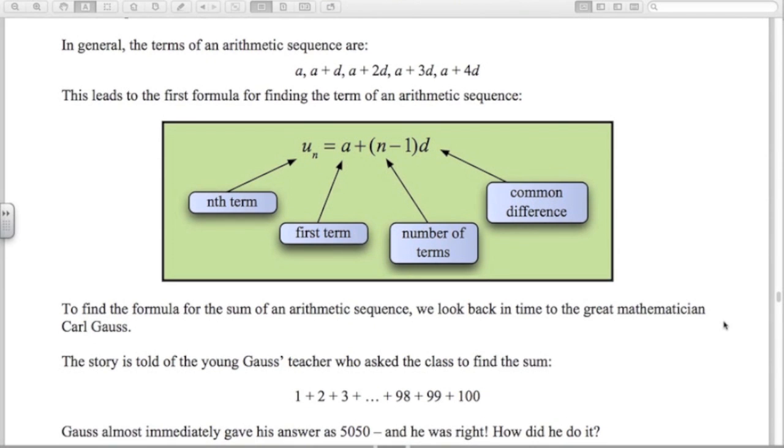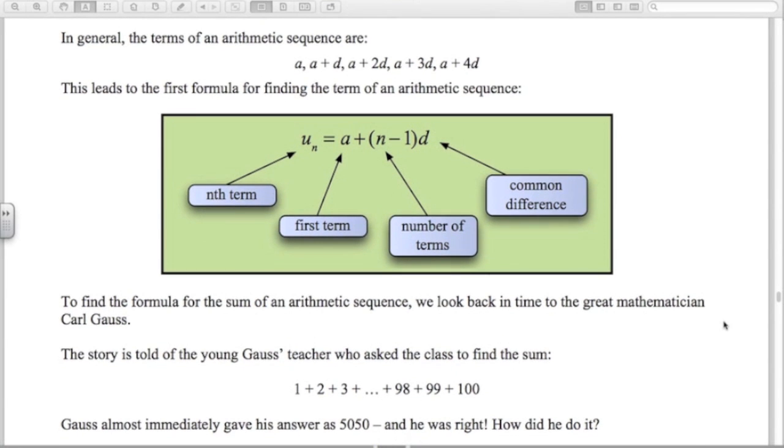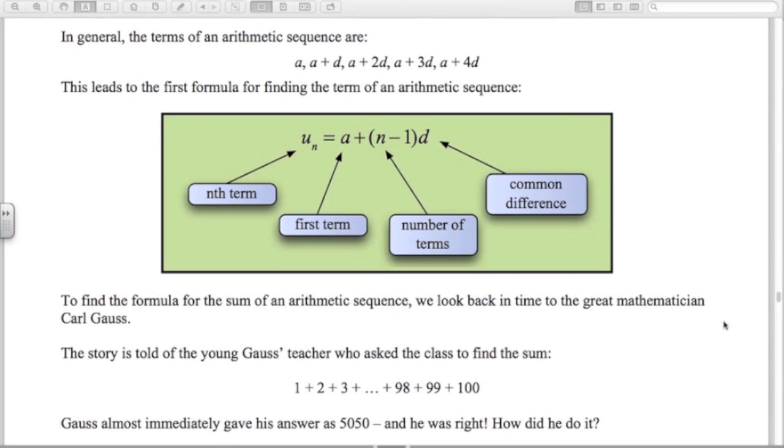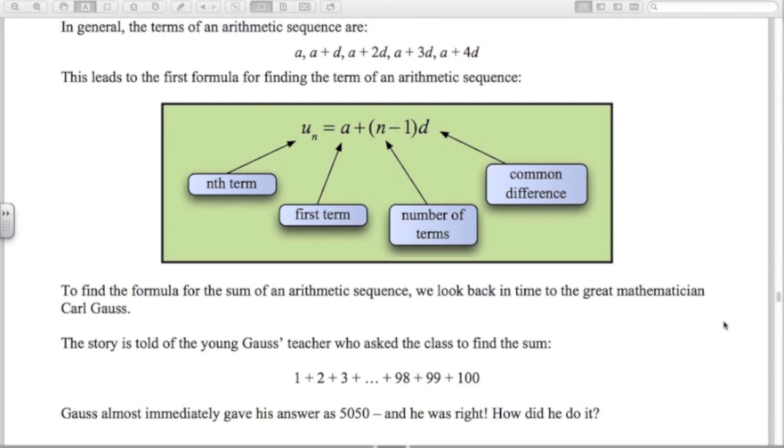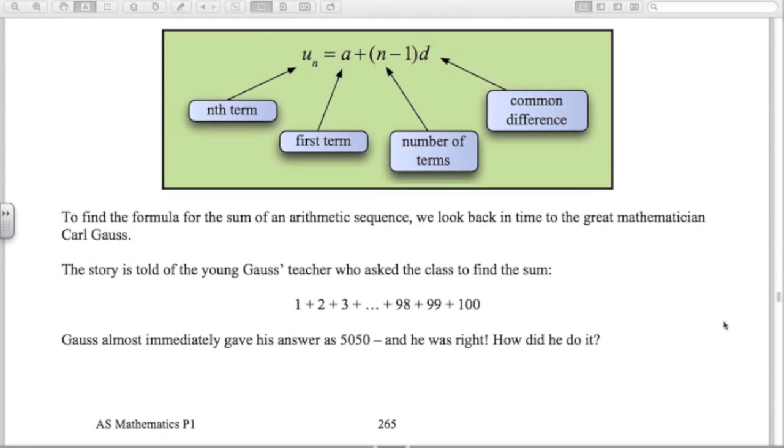Add the numbers from one to a hundred. While everyone in the class got busy with their slates, the teacher settled down for an hour of relaxation. Gauss came right up to the front of the class and put the slate on the teacher's desk with the correct answer straight away. Here's how he did it.